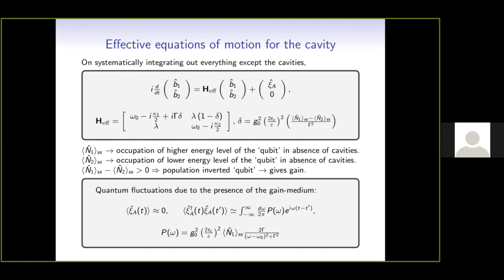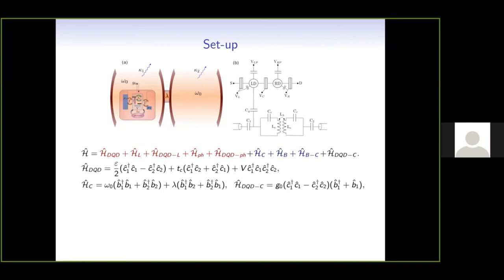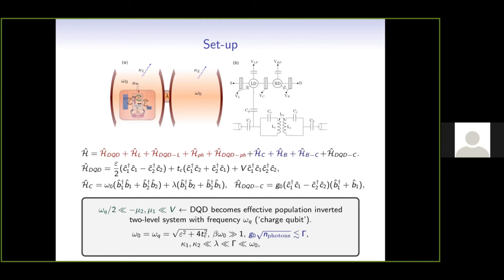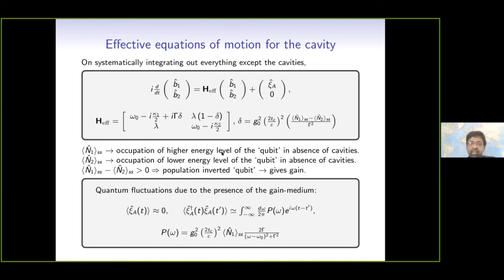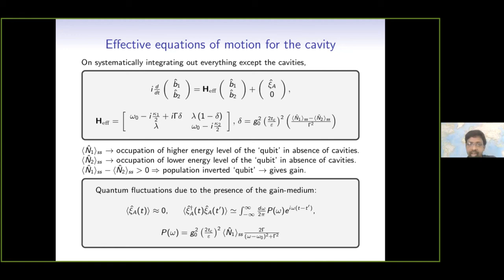Question: Is there something very specific to the hybrid circuit, or could you imagine working with another system? Answer: Everything I am talking about essentially holds for two cavities with a population-inverted qubit in one of them, where the population inversion is somehow maintained. The way to achieve that here is with the hybrid circuit, but you can achieve it any other way — these formulas will still be correct.